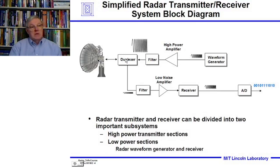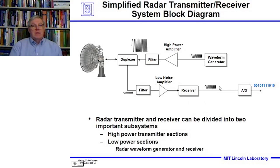Out through the transmitter, the echo comes back where it's filtered, and then we amplify the signal, send it into the receiver, and then we digitize it into a signal that we can process and detect the echoes of the targets.